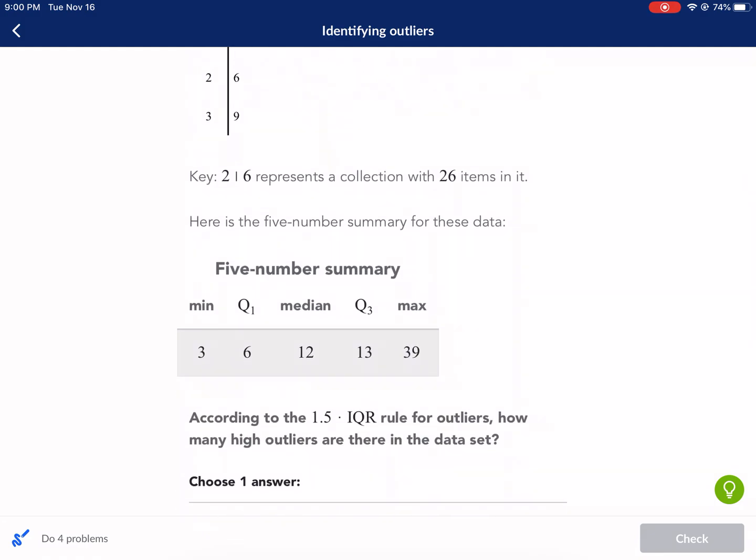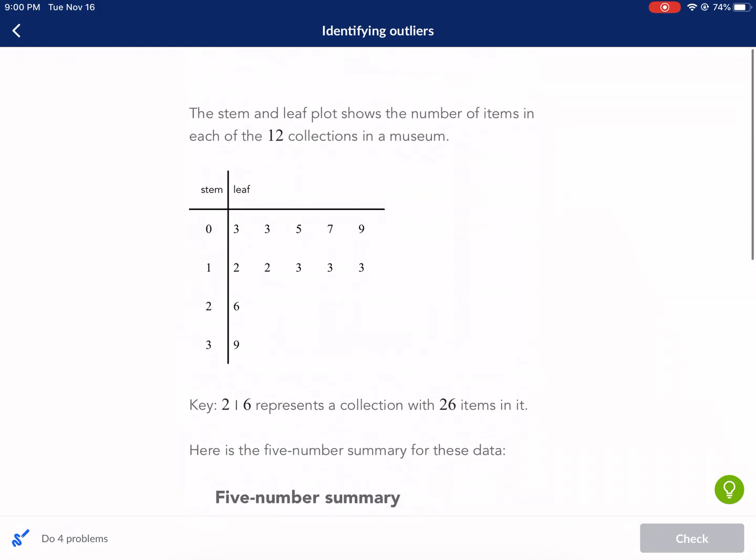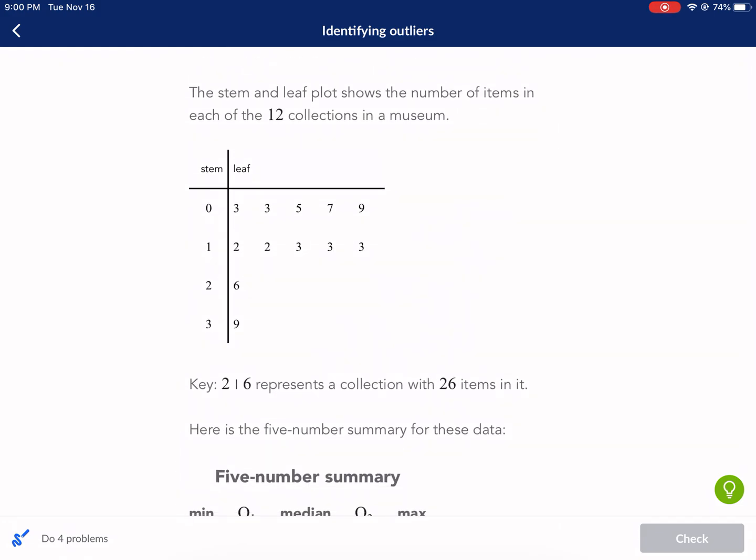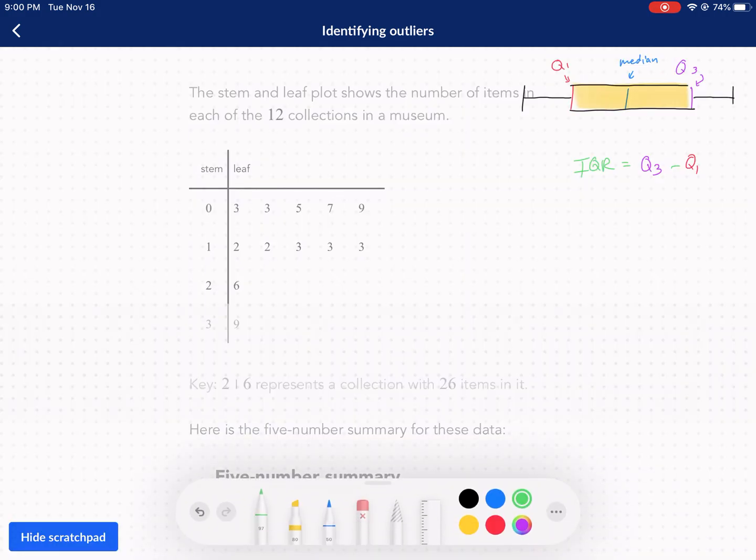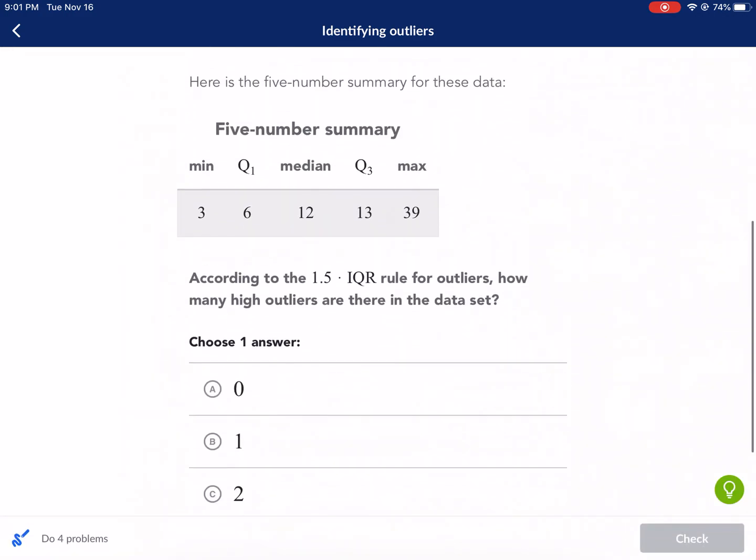And then it says key 2|6 represents a collection with 26 items in it. This is just talking about how to read a stem-and-leaf plot. So the 2 and the 6 represents 26. For example, if you have 1 and 3 that represents 13, and then 1 and 2 represents 12.